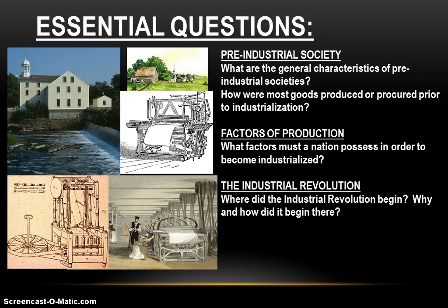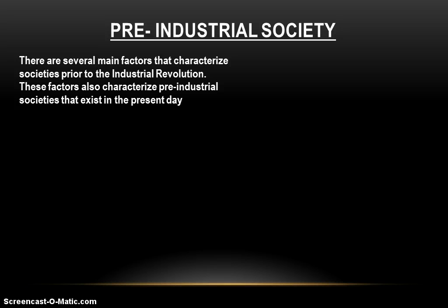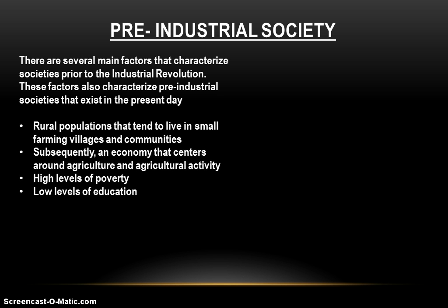Without further ado, let's go ahead and begin. There are several main factors that characterize societies prior to industrialization, and these same factors also characterize pre-industrial societies that exist in the present day. Some of the poorest parts of the world today are still in a state of what we would consider pre-industrial society. Pre-industrial society is, first and foremost, characterized by rural living.